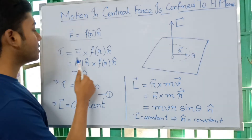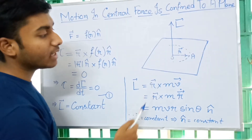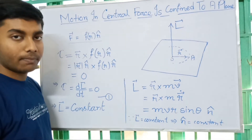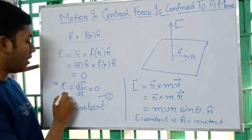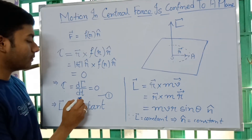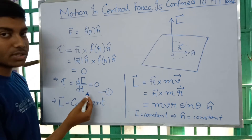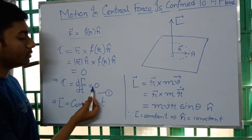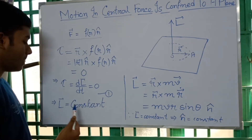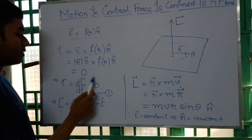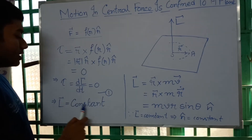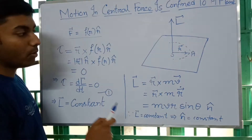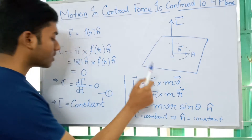So the torque exerted on the particle at point A is zero. As we know τ equals dL/dt, the rate of change of angular momentum. Since τ equals zero, dL/dt equals zero, and from this we can conclude that L is constant — the angular momentum vector L of the particle at point A is constant.